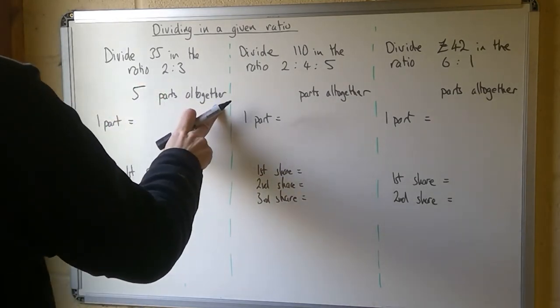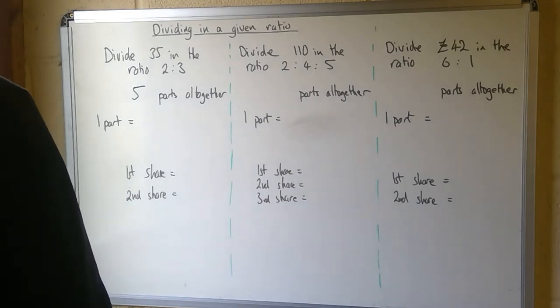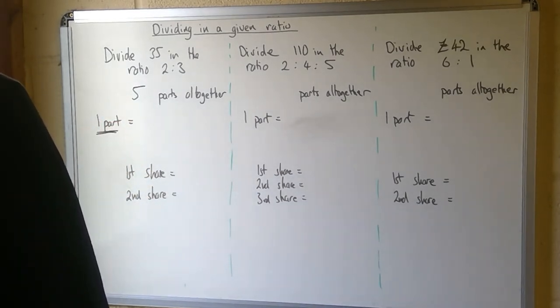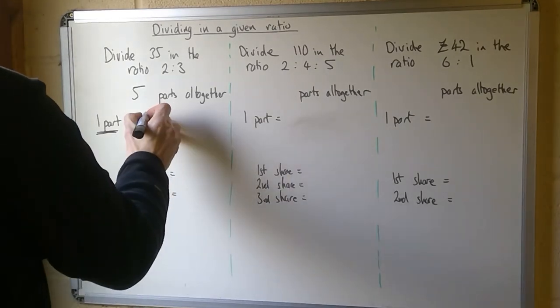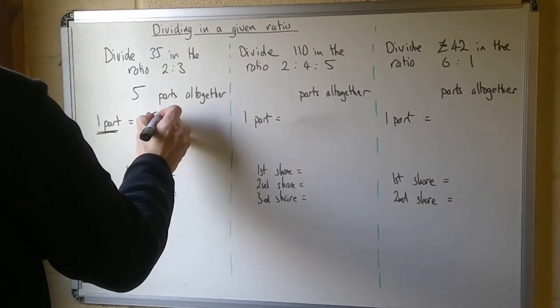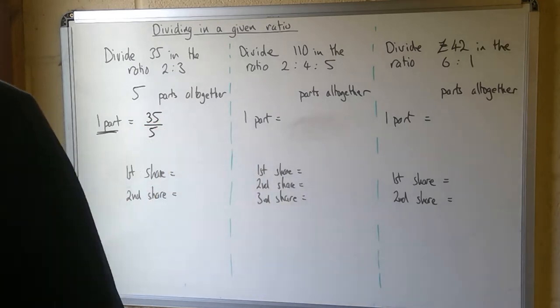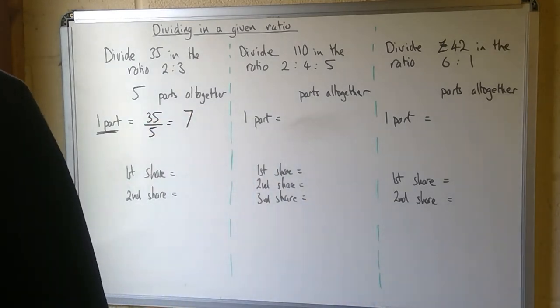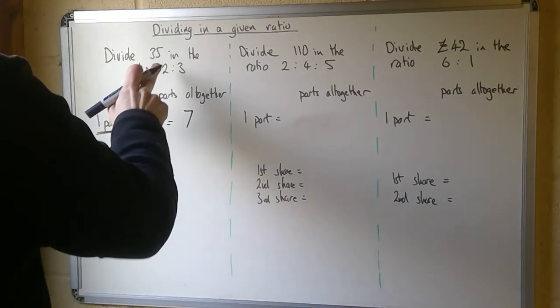So I've got five parts altogether and the crucial thing in all these calculations is to find out what one part is. So to find out one part, I divide the total, 35, by how many parts. So 35 divided by 5, and that gives me 7. So one part is 7.